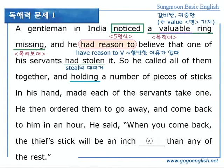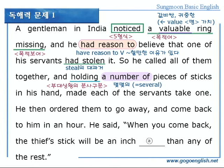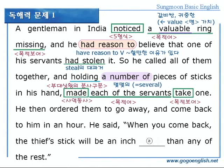먼저, holding 밑줄 쳐보시겠습니까? holding은 부대 상황을 나타내는 분사입니다. 손에 막대기를 들고 있는 것과 하나씩 뽑게 하는 동작이 동시에 일어난다는 것입니다. 그리고 a number of는, 전에 독해 선생님이 말씀드렸다시피, many의 뜻이 아니라 몇몇의, several, S-E-V-E-R-A-L, several의 의미라는 걸 기억하시기 바랍니다. 그리고 made라는 동사에 동그라미 치세요. 사역동사죠. each of the servants, 밑줄, 목적어 되겠습니다. take 동그라미, 목적보어, 이렇게 해서 5형식 문장이고요. made는 사역동사로, 목적보어로는 take, 동사 원형 형태 취한다는 거 기억하시기 바랍니다.